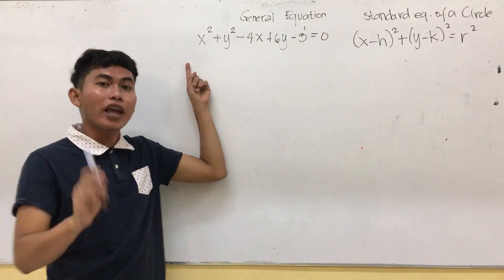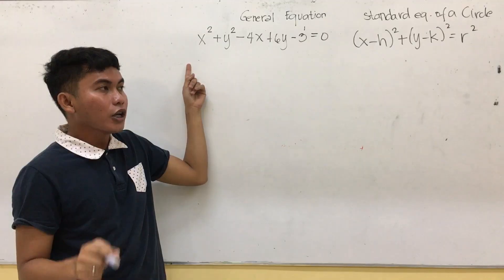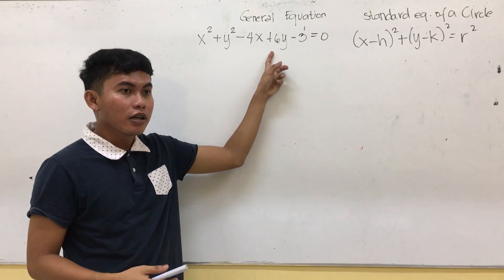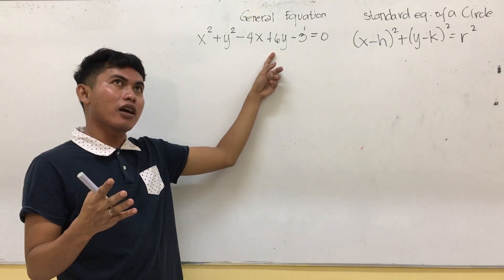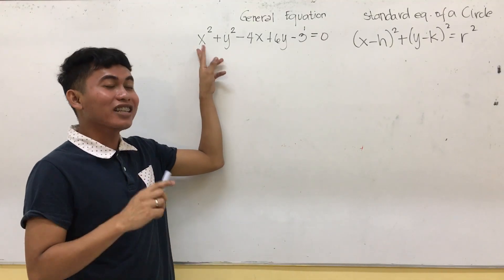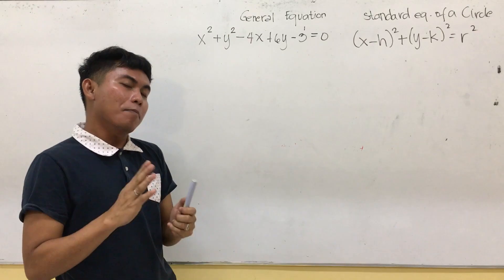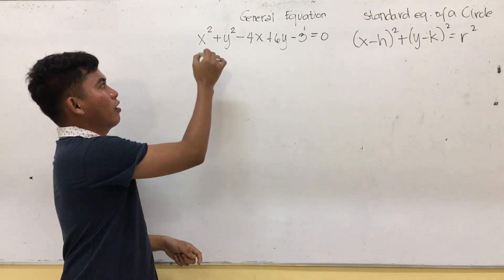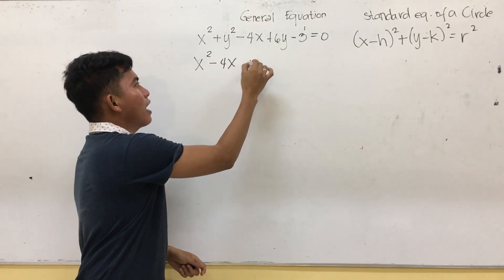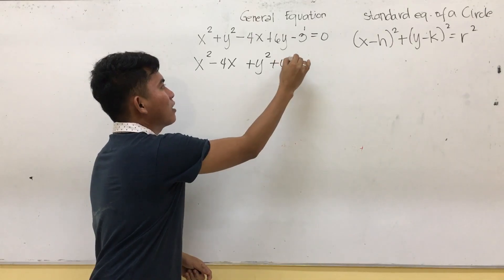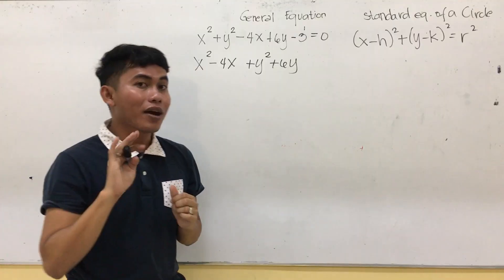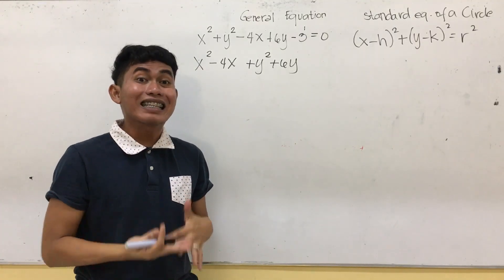The first thing that you are going to do is arrange the terms according to their variable. Group together the same variables. So you have x squared minus 4x plus y squared plus 6y.